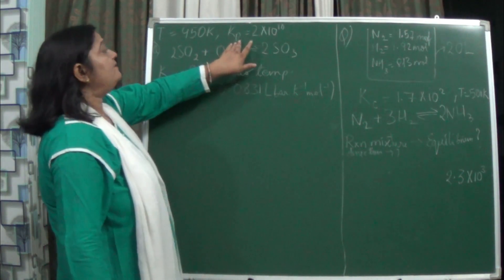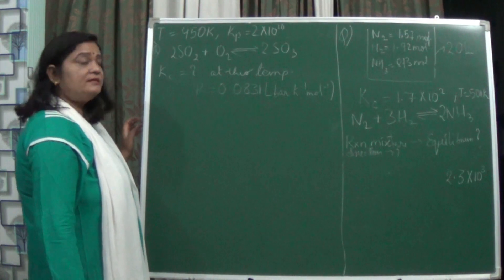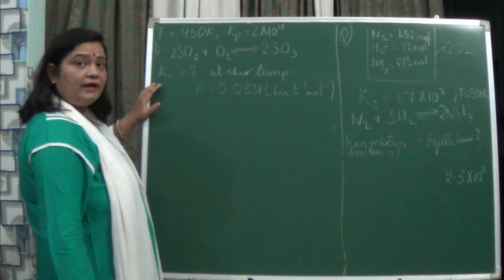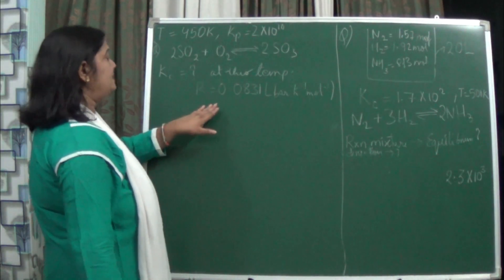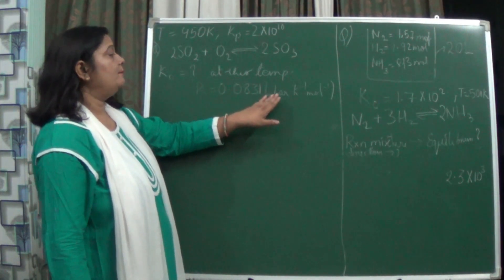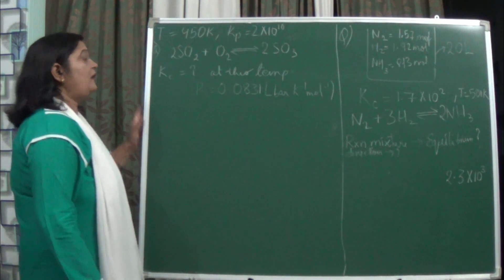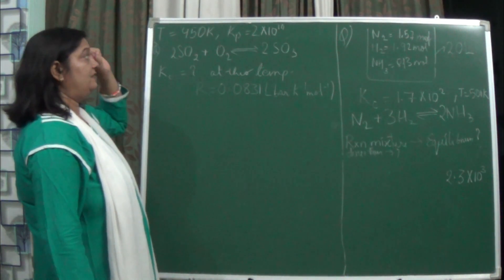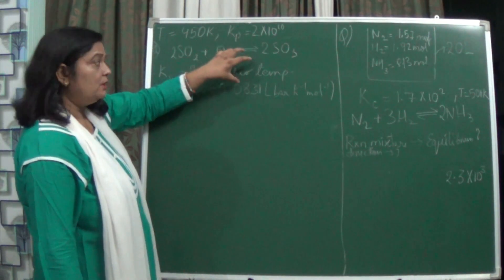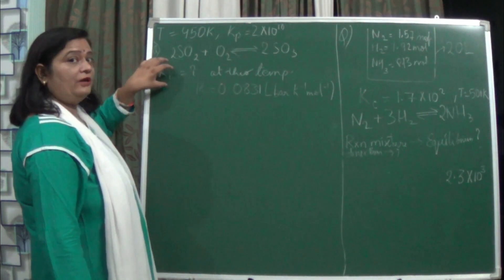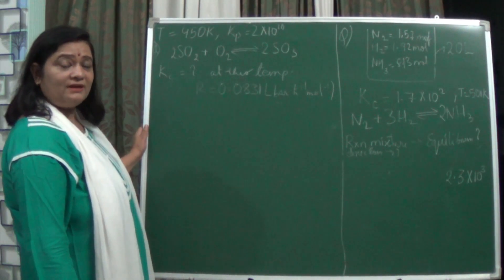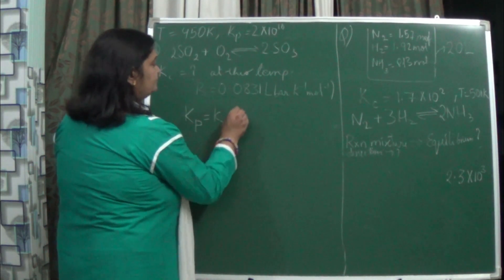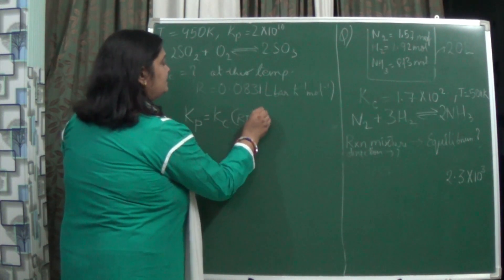Here temperature is given 450 Kelvin. The Kp value is given as 2 into 10 to the power 10. The reaction is 2SO₂ plus O₂, equilibrium sign giving 2SO₃. You have to find the equilibrium constant Kc at this temperature, where R is given as 0.0831 litre bar per Kelvin per mole. The formula to apply is: Kp is equal to Kc into (RT) to the power delta n.